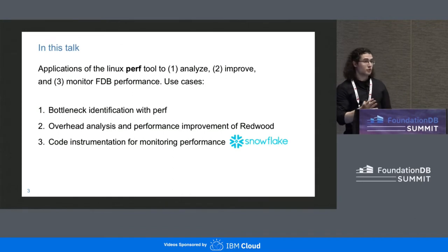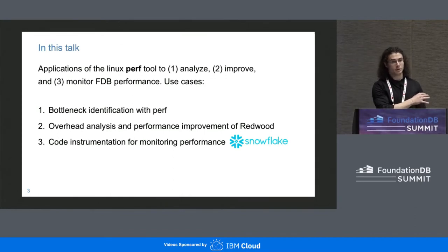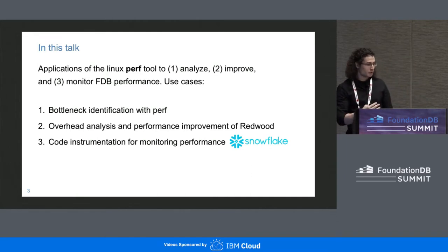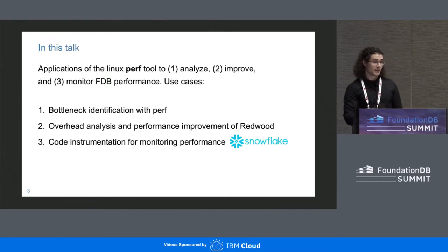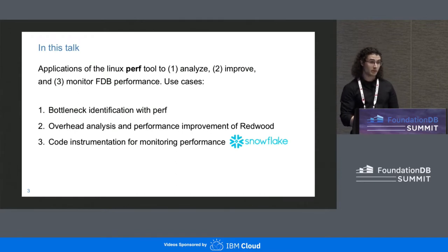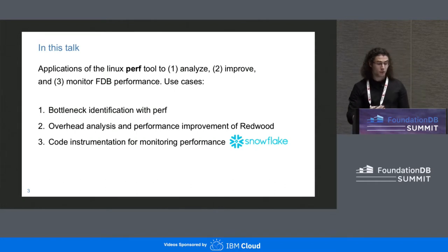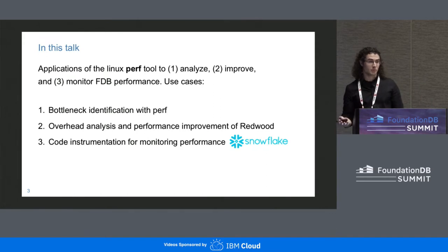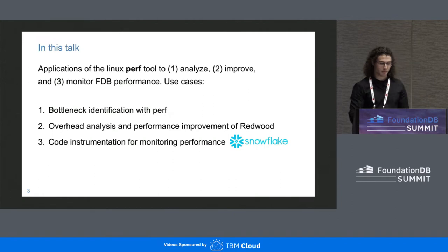In this talk, I'm going to discuss how we use the Linux perf tool to analyze, improve, and monitor the performance of FoundationDB. We'll cover three use cases: first, bottleneck identification using perf; second, overhead analysis and performance improvement of the Redwood storage engine; and third, code instrumentation for monitoring performance, which is kindly contributed by the Snowflake team.